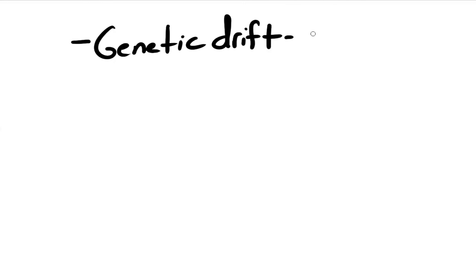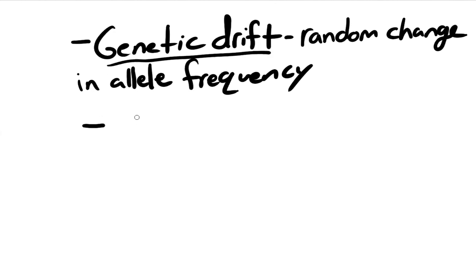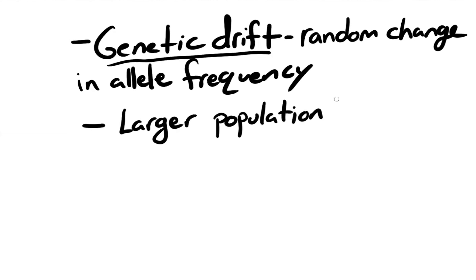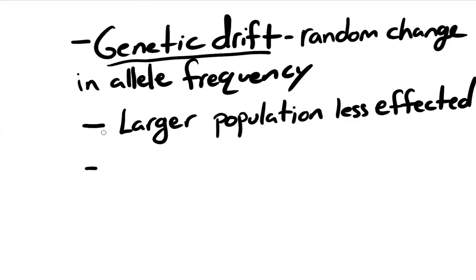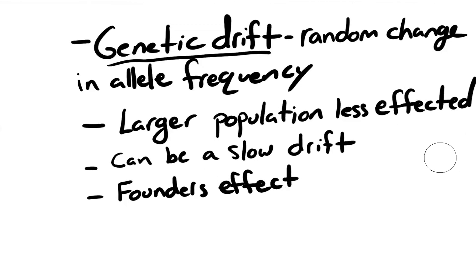To summarize: genetic drift is a random change in allele frequency. This random change can happen at a large scale and rapidly, as in a natural disaster, or at a very small scale and gradually. Larger populations are less affected by genetic drift because the effect is more diluted. Genetic drift can be slow but still have a dramatic effect over a long period of time. Finally, founder effect is when a subdivision of the population inhabits a new location.